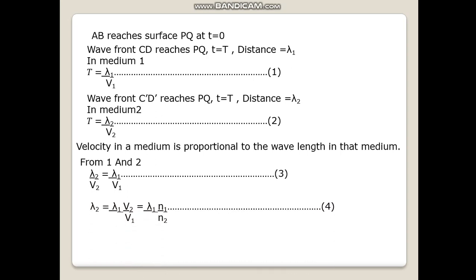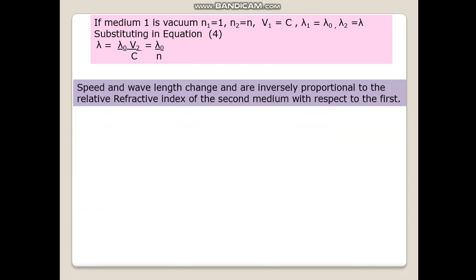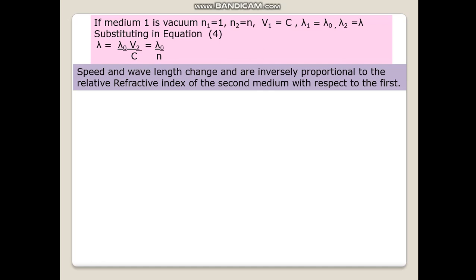Lambda 2 is equal to lambda 1 times V2 upon V1, that is equal to lambda 1 times N1 upon N2. If medium 1 is vacuum, N1 is 1, N2 is N, V1 is C, lambda 1 is lambda naught, and lambda 2 is lambda. Substituting, lambda is equal to lambda naught times V2 upon C, that is lambda naught upon N. So the speed and wavelength change are inversely proportional to the relative refractive index of the second medium with respect to the first. From equation 3, V1 upon V2 is equal to lambda 1 upon lambda 2. Using the formula for velocity, V1 upon V2 is equal to N1 lambda 1 upon N2 lambda 2.